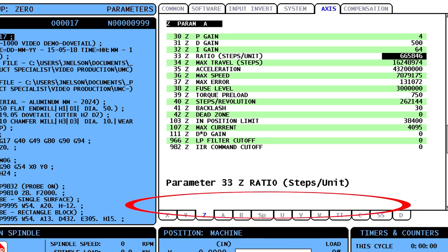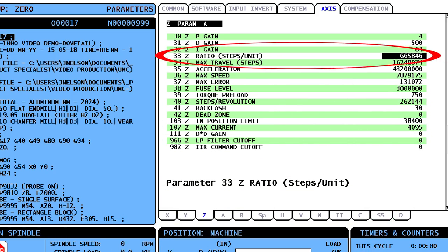Then multiply that number by the value in parameter 33, Z ratio steps unit.